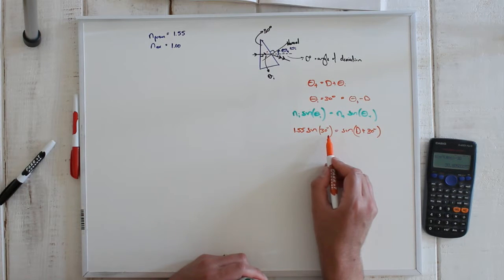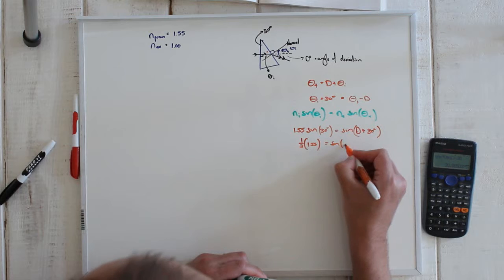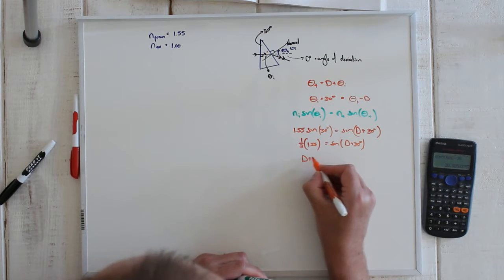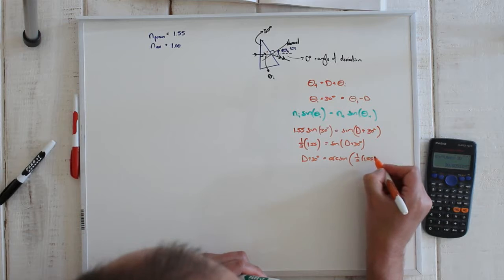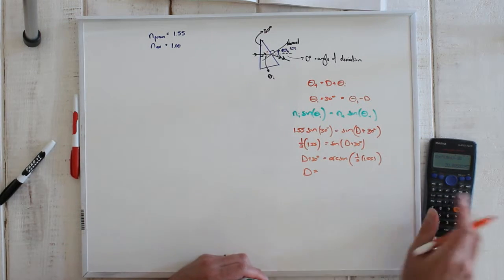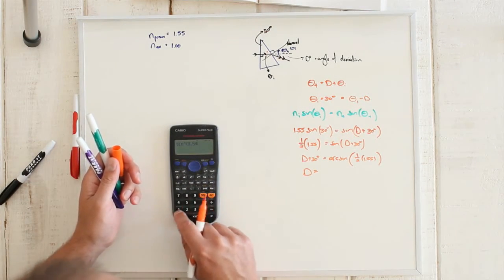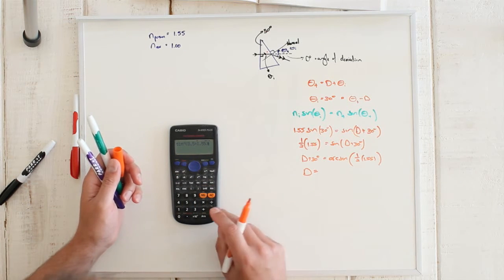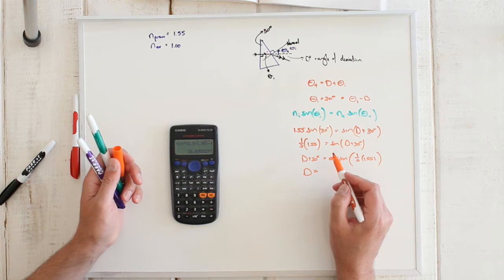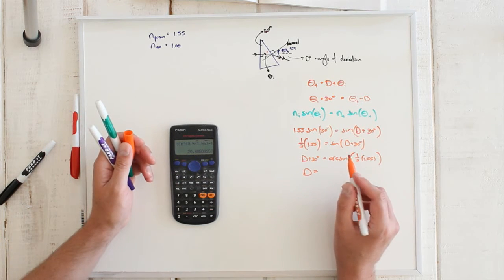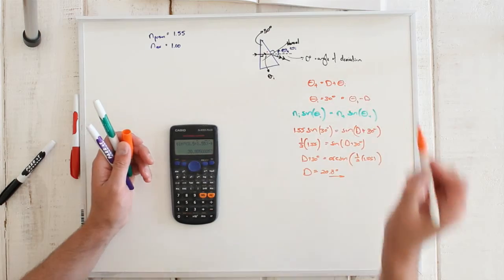Since sine(30°) = 0.5, we get 0.5 times 1.55 equals sine(D + 30°). Therefore D + 30° equals arc sine(0.775), and D equals arc sine(0.5 × 1.55) minus 30 degrees. Calculating that gives an answer of 20.8 degrees, which is our angle of deviation to three significant figures.